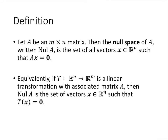Here's the definition. If we have an m by n matrix, then the null space of A, which we write nul(A), is the set of all vectors in R^n such that Ax equals 0. Notice that the number of columns of the matrix is the same as the number of entries of the vector x, so that the product Ax is defined.